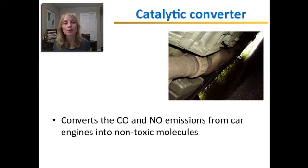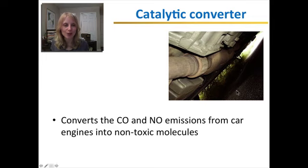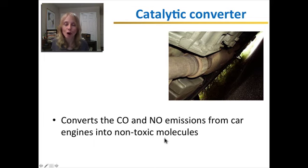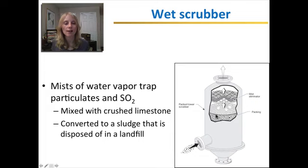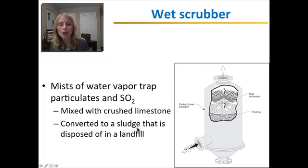There are three ways to reduce air pollution. A catalytic converter reduces emissions from car exhaust — it converts carbon monoxide and nitrogen oxide emissions into non-toxic molecules. If you have an older car, make sure to check that it's working properly. A wet scrubber can be installed in a factory — dirty air goes in, the pollutants are sprayed with mists of water vapor, which traps particulates and sulfur dioxide. They get mixed with crushed limestone and converted into a sludge disposed of in a landfill, and clean air comes out.